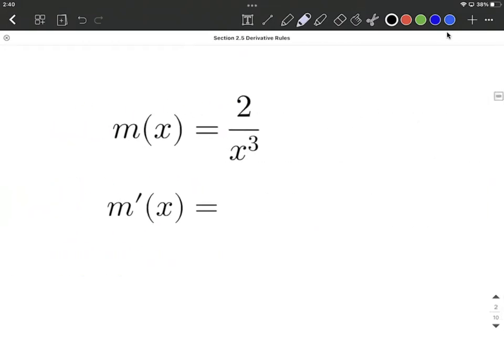One more of these. m of x is 2 divided by x to the third power. Now there is a quotient rule, like if we have fractions. However, in this case, let's use our exponent rules and rewrite our function with a negative exponent. So that would be 2 times x to the negative third power, bringing x cubed up to the numerator and making it a negative exponent. Now we can use the power rule.